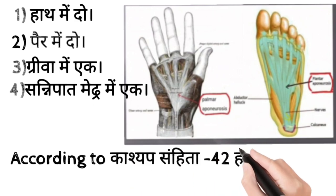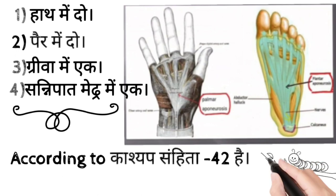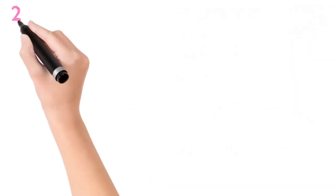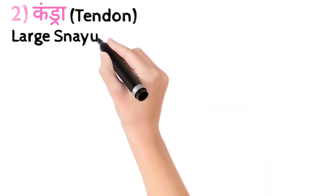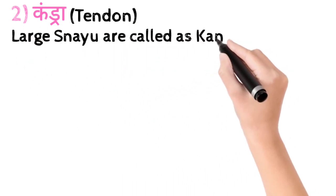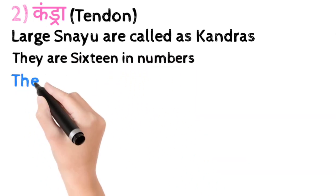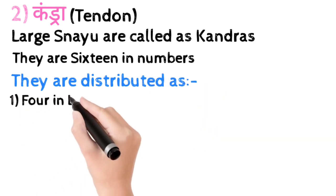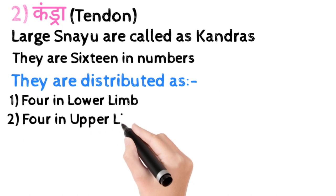Shriyak, Kashap is approved in Shriyak. Shriyak is Tipo. It's called Kandra means tendon. Large snails are called Kandras. These are 16 in number. How is it? Four in lower limb, four in upper limb, four in neck region, four in back region.